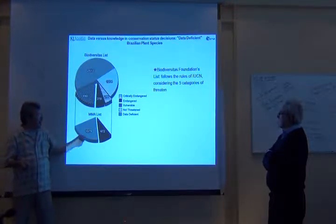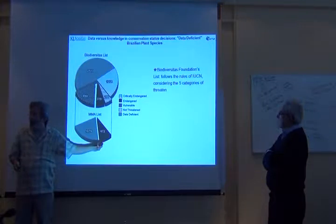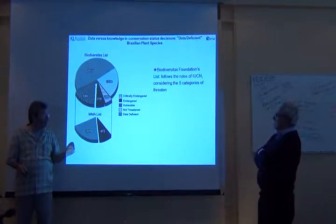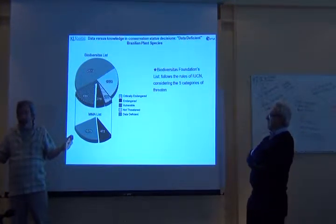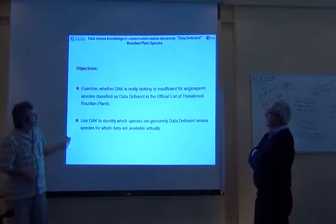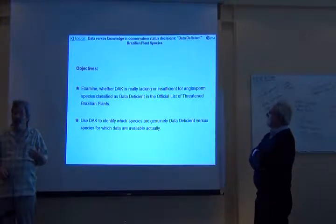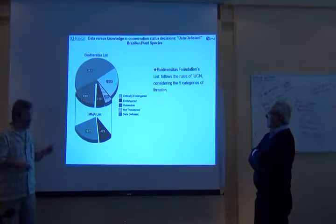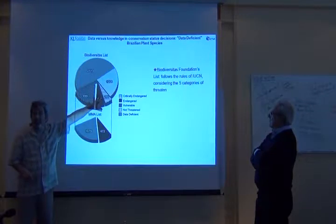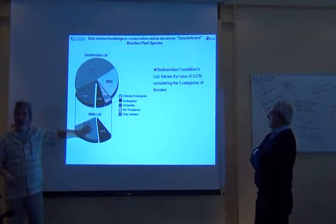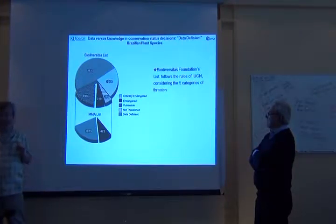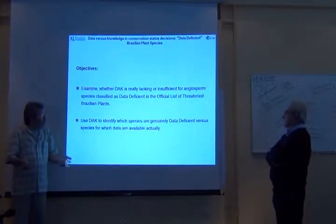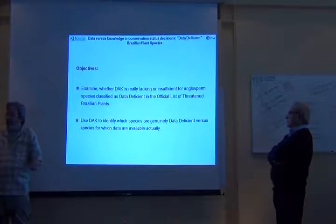Speculation as to the reason why: for species in the endangered category, you have to immediately have an action plan under the Brazilian law. For these data-deficient species, you don't have to do anything. So what we set out to do in this second paper was to ask: for that set of a thousand data-deficient species — which the scientists said were under some threat — are these species really data deficient? We essentially used the digital accessible knowledge to see how much we know about that set of putatively data-deficient species.